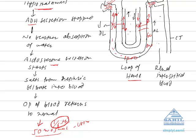In this concentrating mechanism, watch what happens — it is exactly opposite to the diluting mechanism. In the diluting mechanism, ADH secretion does not occur and aldosterone secretion does not occur. In the concentrating mechanism, aldosterone is not secreted but ADH hormone is secreted, because the blood needs water. ADH acts on the DCT.